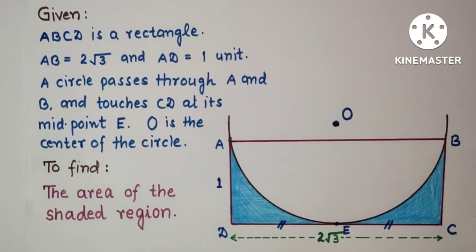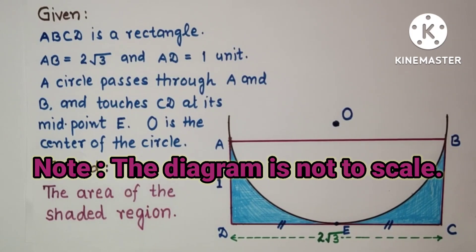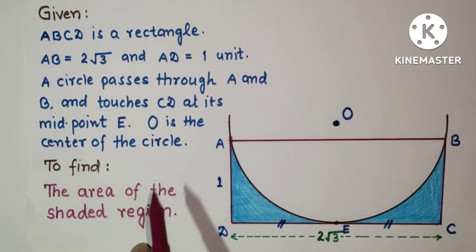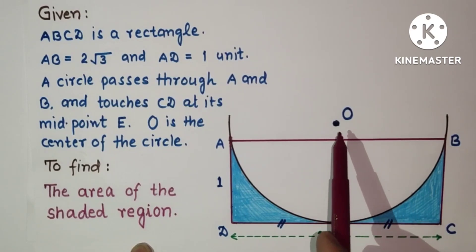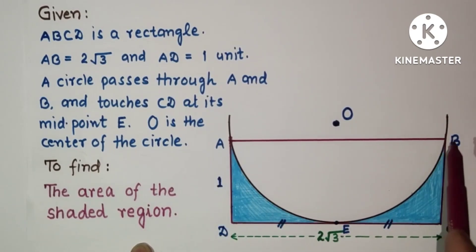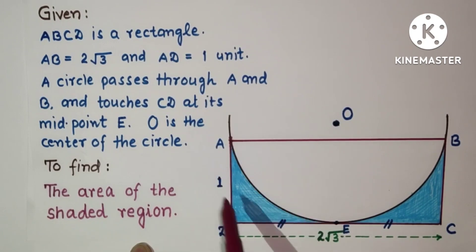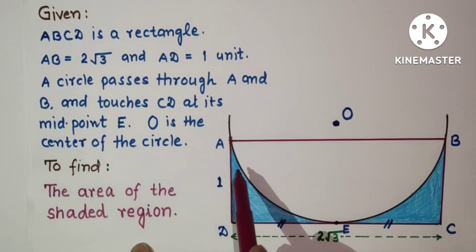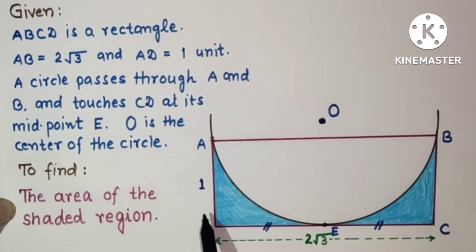Hello friends and viewers, welcome to the channel. Today we will discuss a problem in which we have to find the area of the shaded portion of the diagram given in the question. We are given a rectangle ABCD, where the length of AB is 2√3 and the length of AD is 1. O is the center of the circle. This part is a segment (not a semicircle), and E is the midpoint of DC where the circle touches. The circle passes through points A and B. We have to find this shaded portion's area.